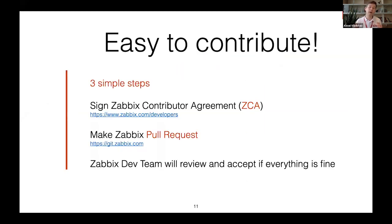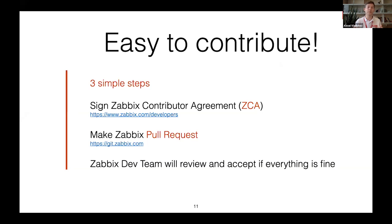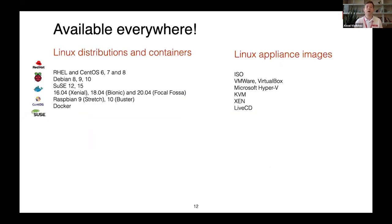Suppose you've created a template, plugin, or web hook and want to share it with the community or make it part of Zabbix. Now we have an easy way to contribute: first, sign the Zabbix contributor agreement. Then make a pull request to the Zabbix codebase. Our QA team and integration team will review it, and if everything is fine, your plugin will be accepted and officially supported by the Zabbix team. It's a win-win situation for you, the community, and us.